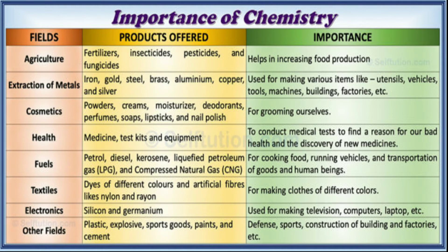In agriculture, chemistry offers fertilizers, insecticides, pesticides, and fungicides, which help increase food production. In metallurgy, metals like iron, gold, steel, brass, aluminium, copper, and silver are extracted and used for utensils, vehicles, tools, machines, buildings, and factories. In cosmetics, powders, creams, moisturizers, deodorants, perfumes, soaps, lipsticks, and nail polish are all gifts of chemistry, used for grooming and decorating ourselves. Chemistry also provides medicines, test kits, and equipment for performing medical tests.